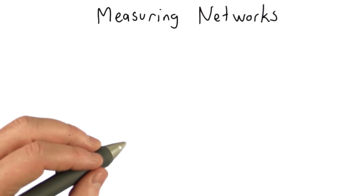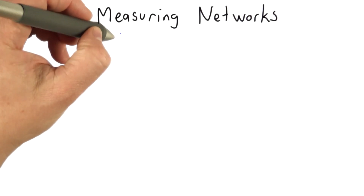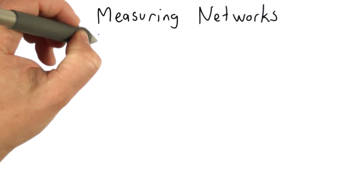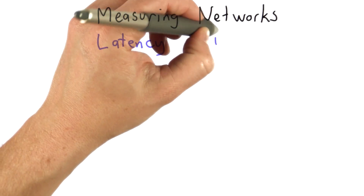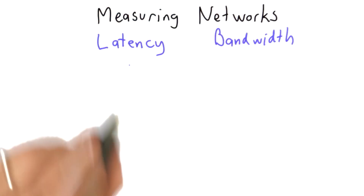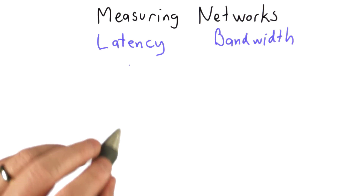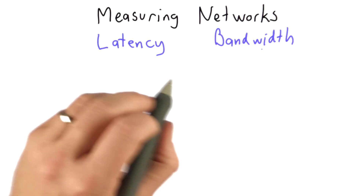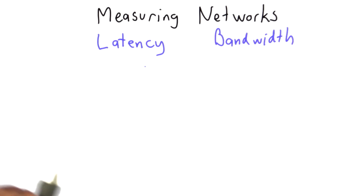I want to talk about the two main ways to measure a network. Those are called latency and bandwidth. What they mean is very different — they're often confused. Often people say bandwidth when they mean latency, or say latency when they mean bandwidth. They're quite different things, so let me explain what they are.